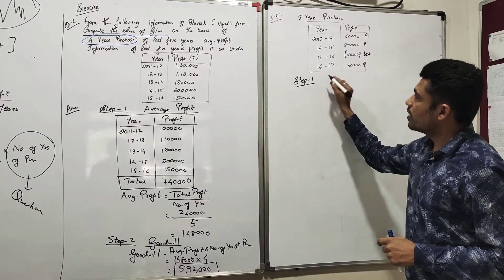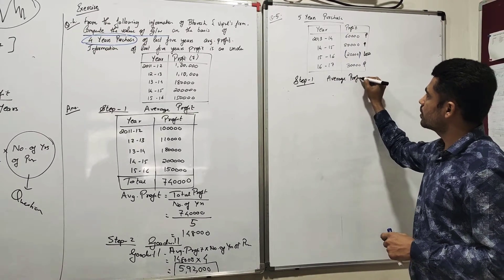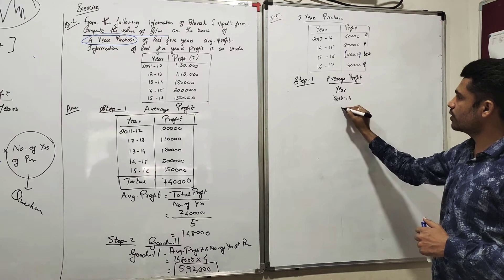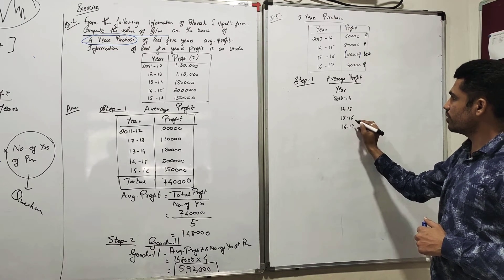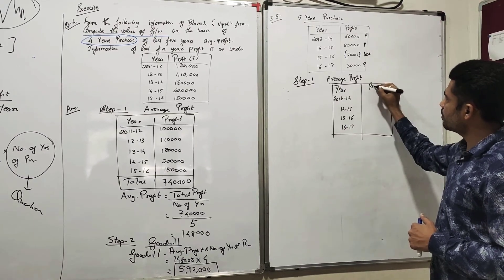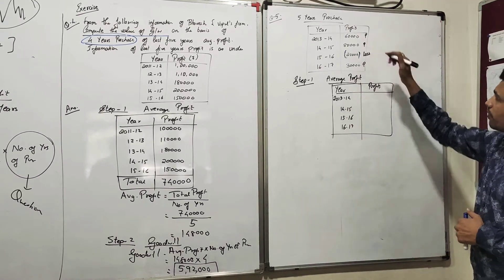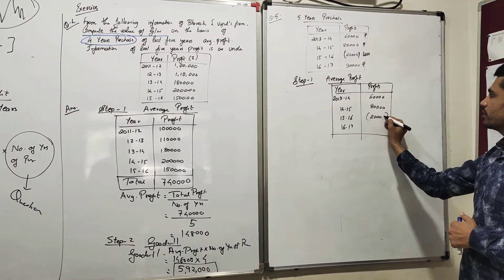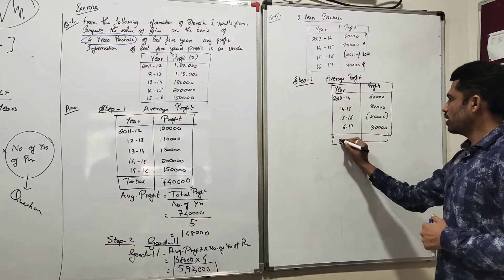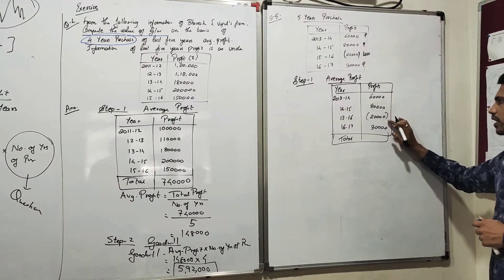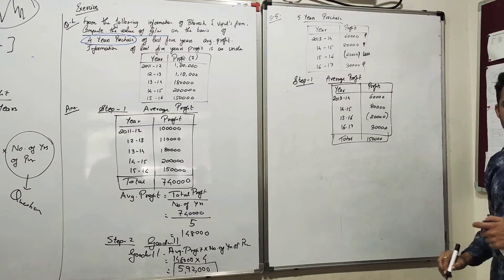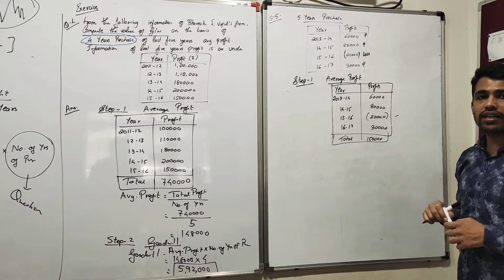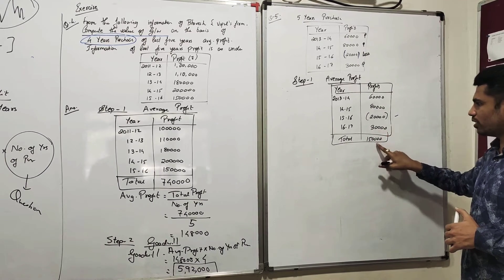Step one is Average Profit. Copy down the table: Year 2013-14, 2014-15, 2015-16, 2016-17. Profits: sixty thousand, eighty thousand, bracket twenty thousand (loss), and thirty thousand. The total is: sixty thousand plus eighty thousand minus twenty thousand plus thirty thousand equals one lakh fifty thousand.